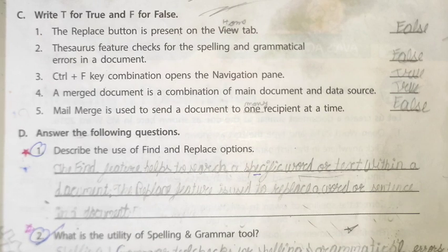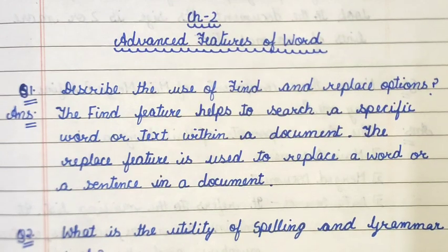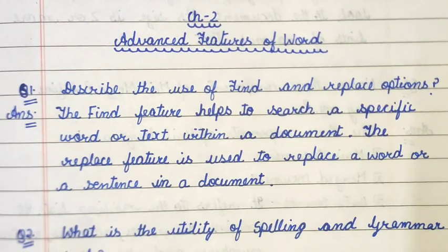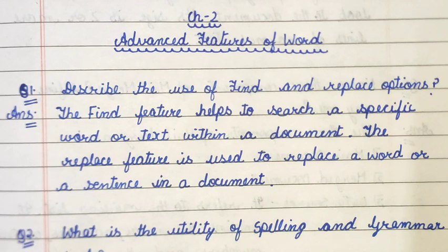Part D, answer the following questions. Question number one: describe the use of find and replace options. Answer: the find feature helps to search a specific word or text within a document. The replace feature is used to replace a word or a sentence in a document.